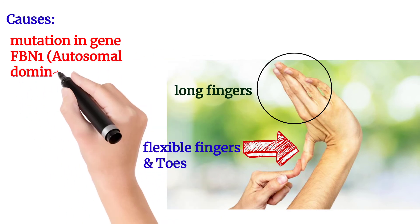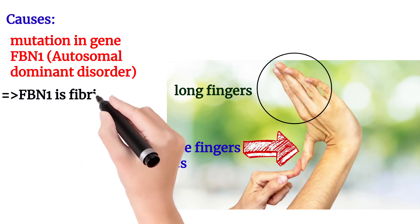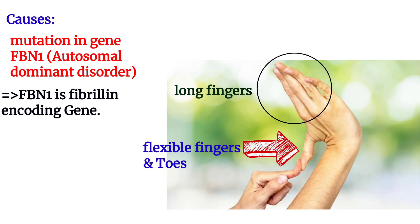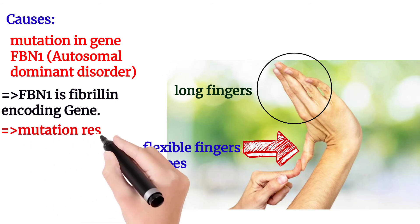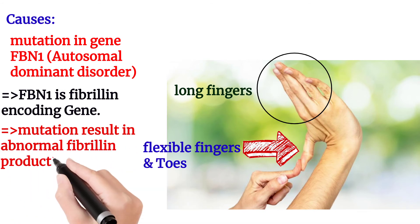The cause of Marfan syndrome is a mutation in the FBN1 gene, which is an autosomal dominant disorder. FBN1 is a fibrillin-encoding gene; a defective mutation in FBN1 results in abnormal fibrillin, which affects the connective tissue.